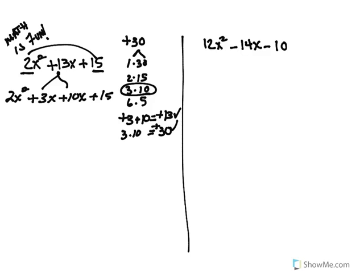Once you have four terms, you just go and factor by grouping. So I'm going to pull out x.